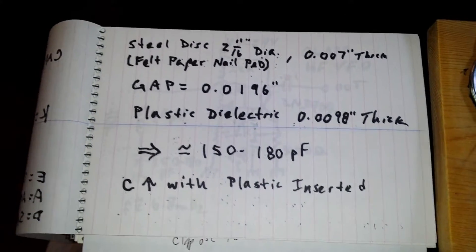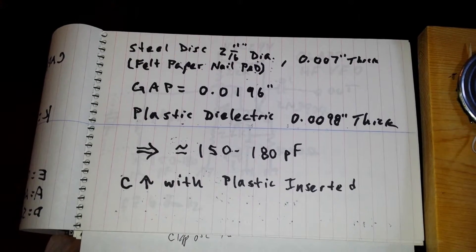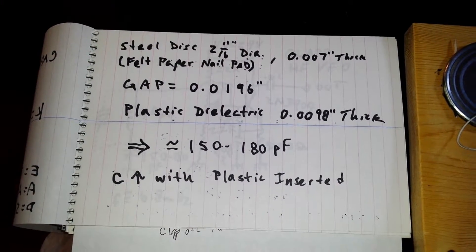Those discs are 2-11-16th inch felt paper nail pads from the hardware store. The gap is 0.0196 inches.